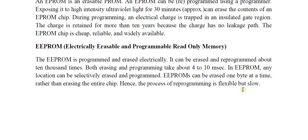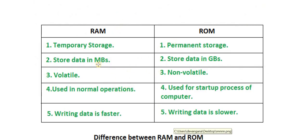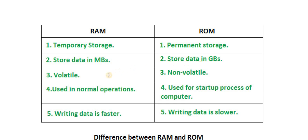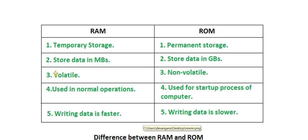The difference between RAM and ROM: RAM is temporary storage while ROM is permanent storage. RAM stores data in MBs while ROM stores data in GBs. RAM is volatile; ROM is non-volatile. RAM is used in normal computer operation; ROM is used for the startup process. In RAM, writing data is faster, while in ROM writing data is slower than RAM.